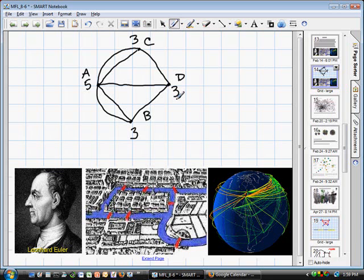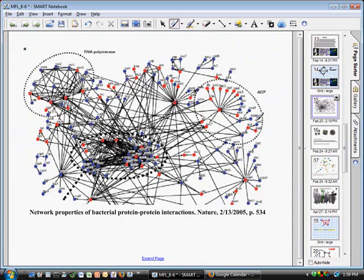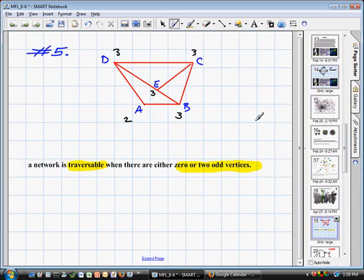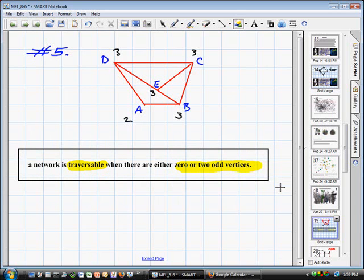Euler found out that you can do this only when you either have zero or two odd vertices. Zero or two odd vertices. Now, if you go back to our problem, how many odd vertices do we have? Four. It's not zero. It's not two. Therefore, we say this can't be done. I mean, you can do it if you cheated and crossed one bridge twice. But if you follow the rules, it can't be done. There's a word for this. If it can be done, we call it traversable. If it can't be done, it's not traversable.